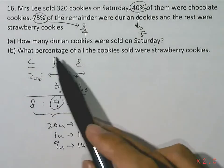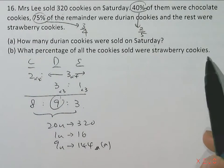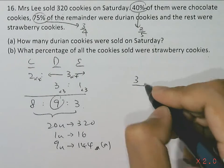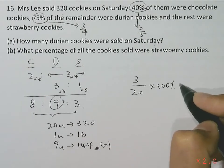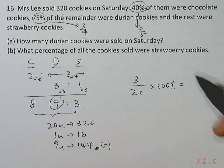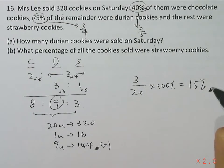Part B, what percentage of all the cookies sold were strawberry cookies? So we have three units of strawberry cookies out of the total of 20, multiplying by 100. So that gives us the percentage of 15% for part B.